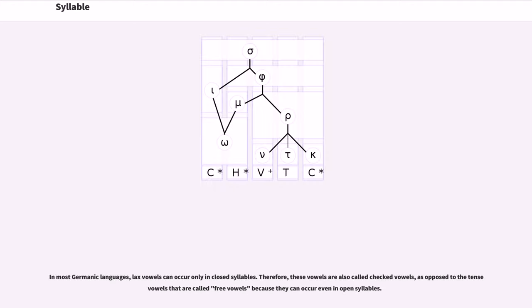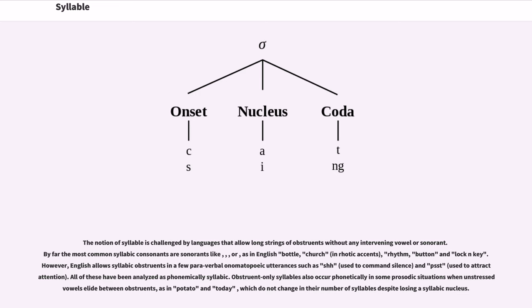In most Germanic languages, lax vowels can occur only in closed syllables. Therefore, these vowels are also called checked vowels, as opposed to the tense vowels that are called free vowels because they can occur even in open syllables. The notion of syllable is challenged by languages that allow long strings of obstruents without any intervening vowel or sonorant. By far the most common syllabic consonants are sonorants like l or r, as in English bottle, church, rhythm, button and lock.